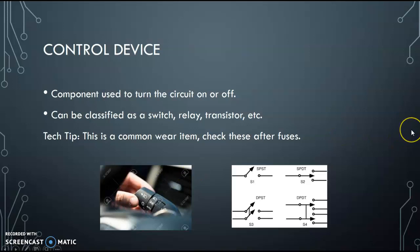Then you have your control device. These are switches. This is what you use to operate the circuit. Turn it on or off. Switch, relay, transistor, etc. We're going to talk about relays and transistors later. This is a common wear item. You know, check these after the fuses. So you check the battery. Make sure you've got 12 volts. Make sure it's charging. Make sure that you have the fuses are good. Make sure they're not blown. And then make sure your switches are working. Just look at a switch. You have, remember, load to ground and switch to ground. So some switches control the ground. Some switches control the power.